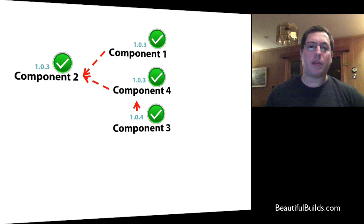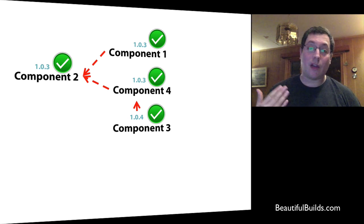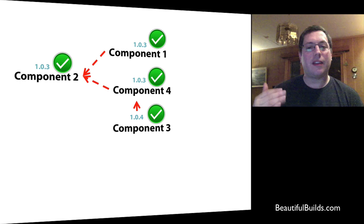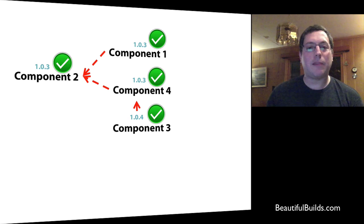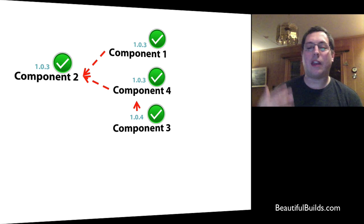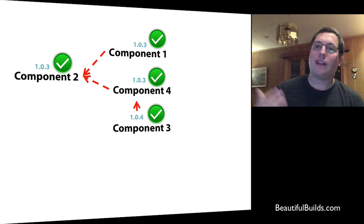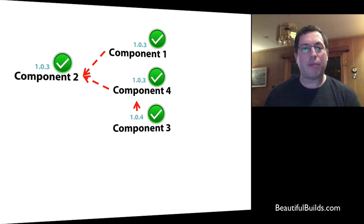We're going to use kind of the same thing but take a bigger view. Imagine we have all these components and each component is actually developed by a separate team. These components are developed separately in parallel and they have their own schedules for when they get released, when teams fix bugs, or they work in different time zones.